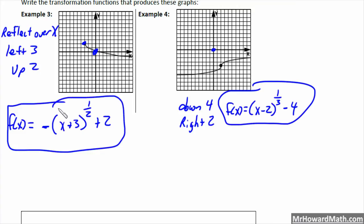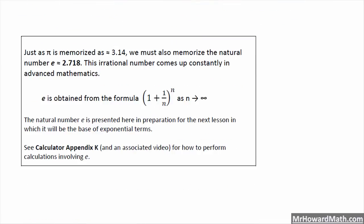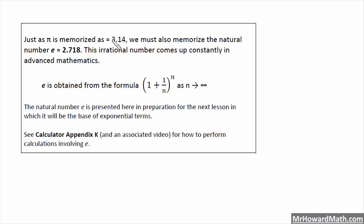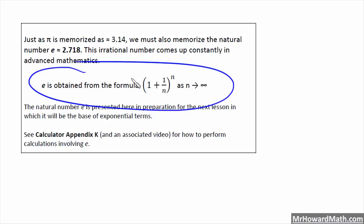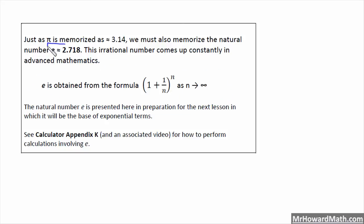One last topic: where does E come from? Just like we memorize pi as approximately 3.14, when working with exponentials we need to memorize E, which is approximately 2.718. We will be working with graphing exponential functions with base E. The main takeaway is to memorize E as approximately 2.718.